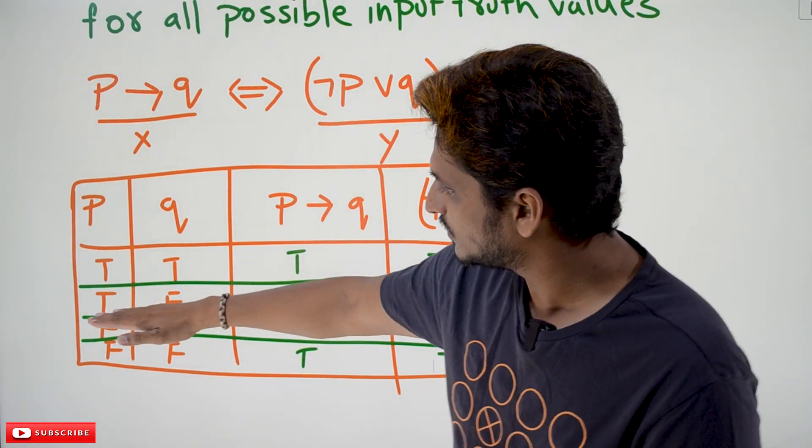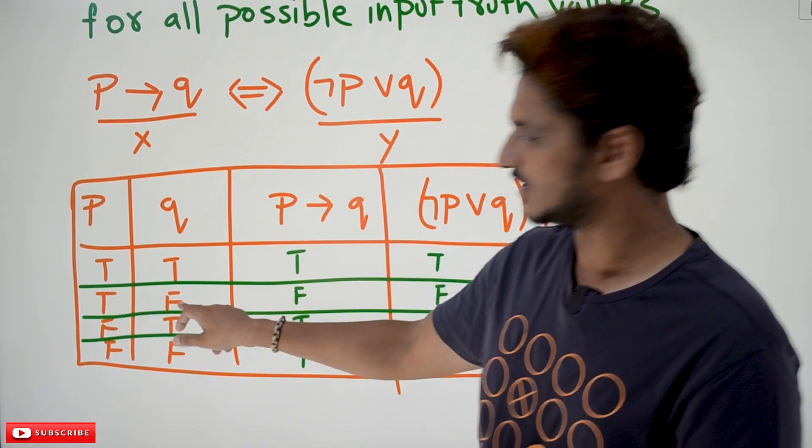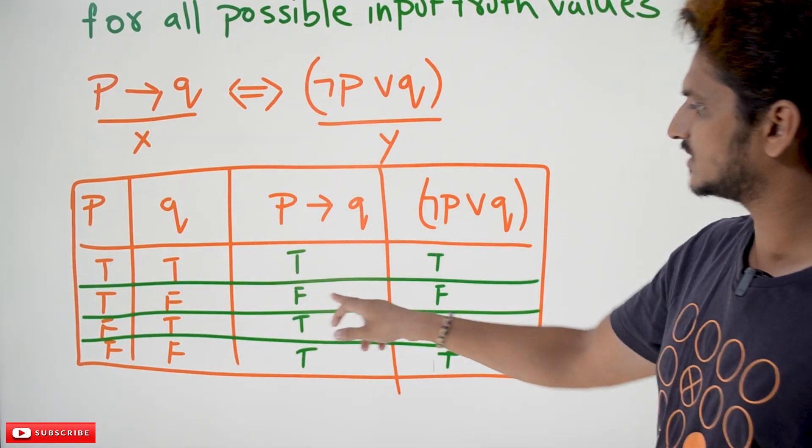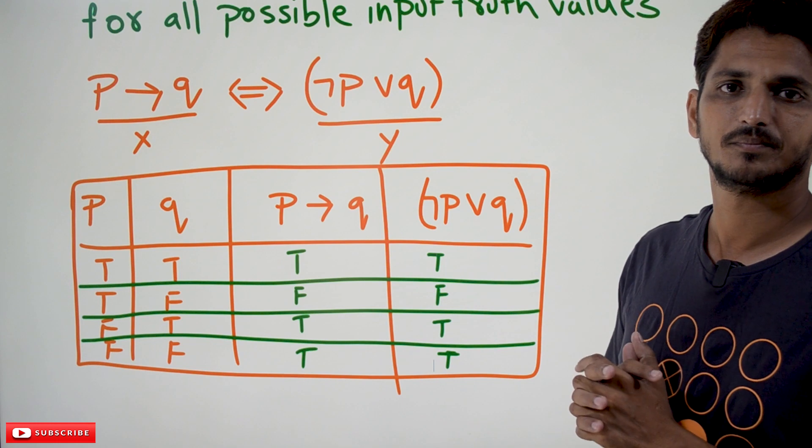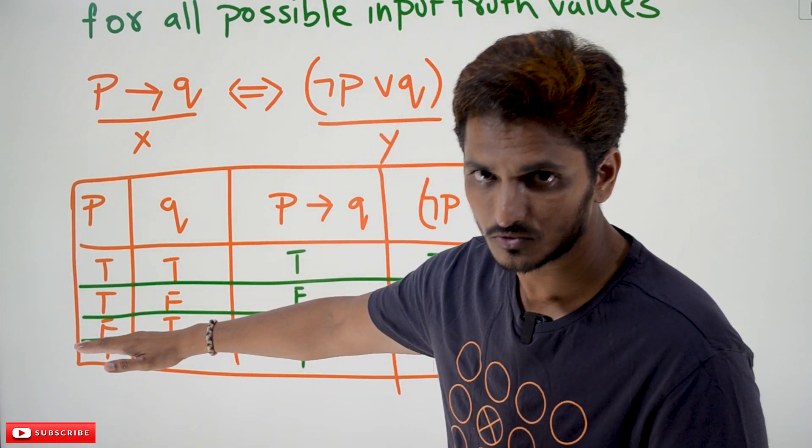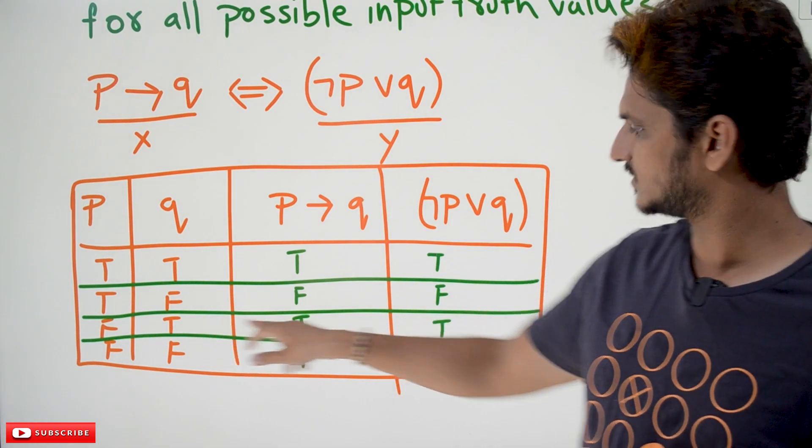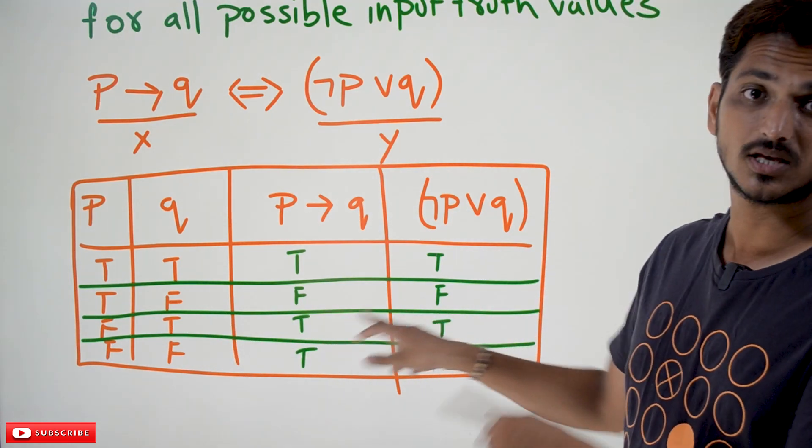Take the next possible input truth value, true and false. For this, what is the output? F and F. F means both are same. Take the next possible input truth value, false and true. What is the output? T and T. Both are same.